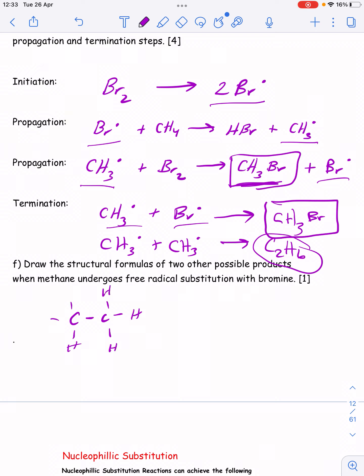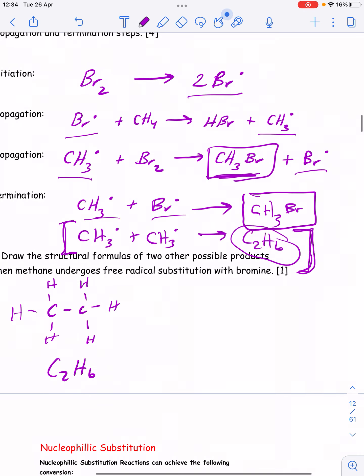We've shown in our termination steps that C2H6 is another product, another organic product that could form in this reaction. If these two methyl groups met each other and reacted, they would form ethane.